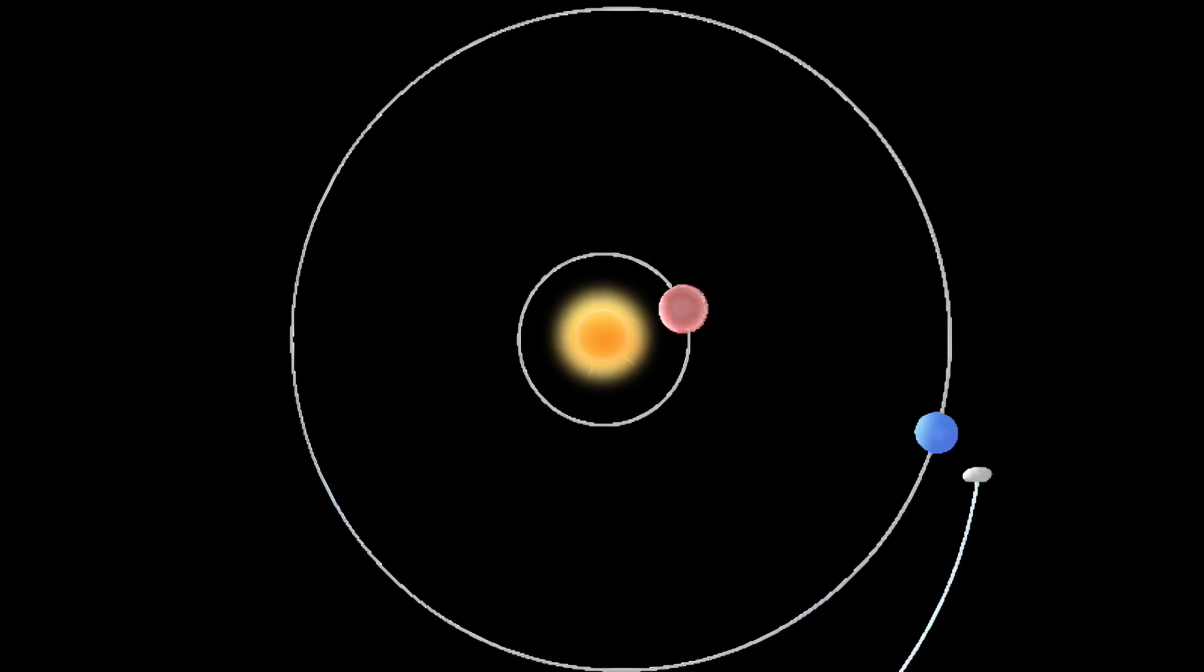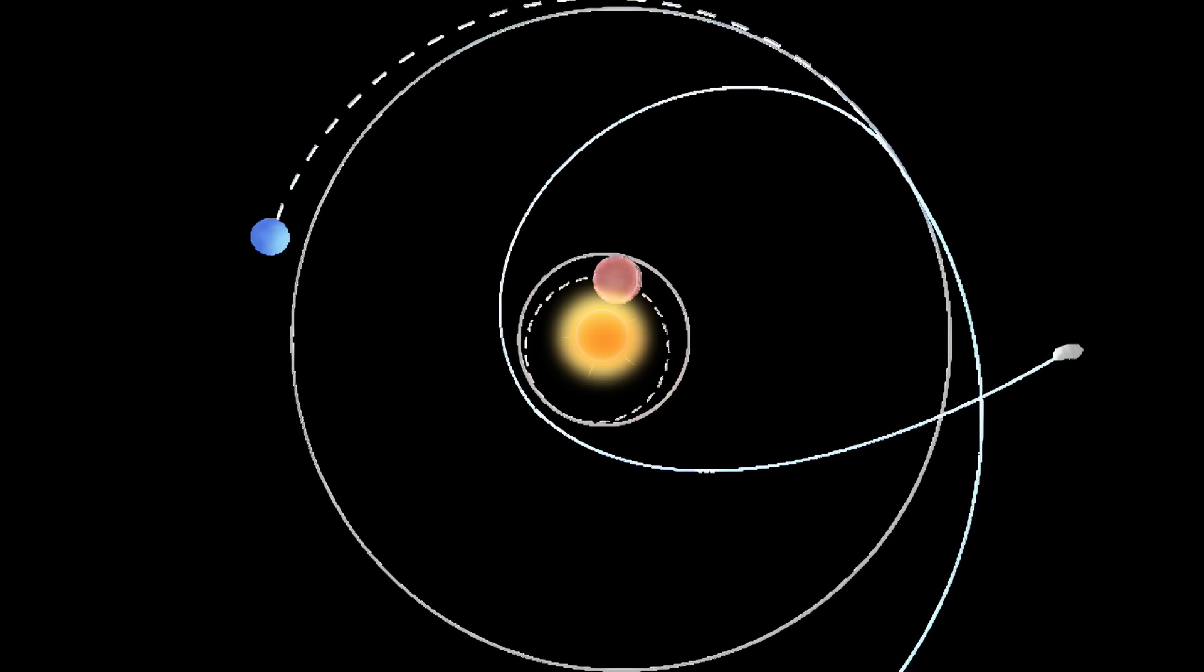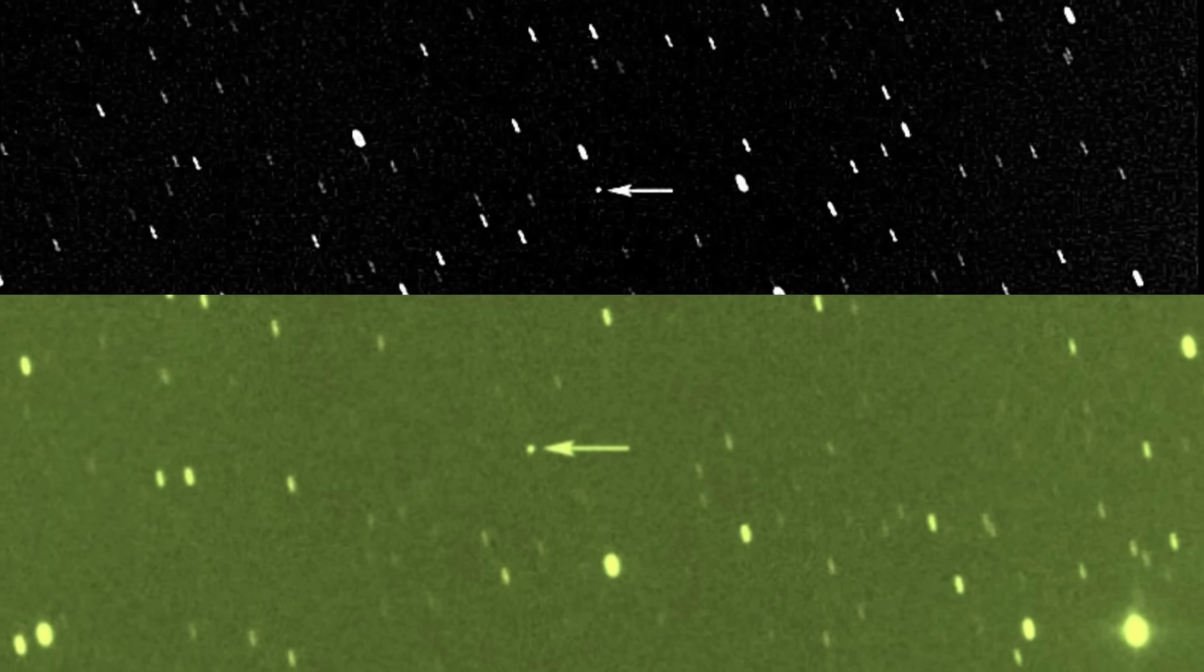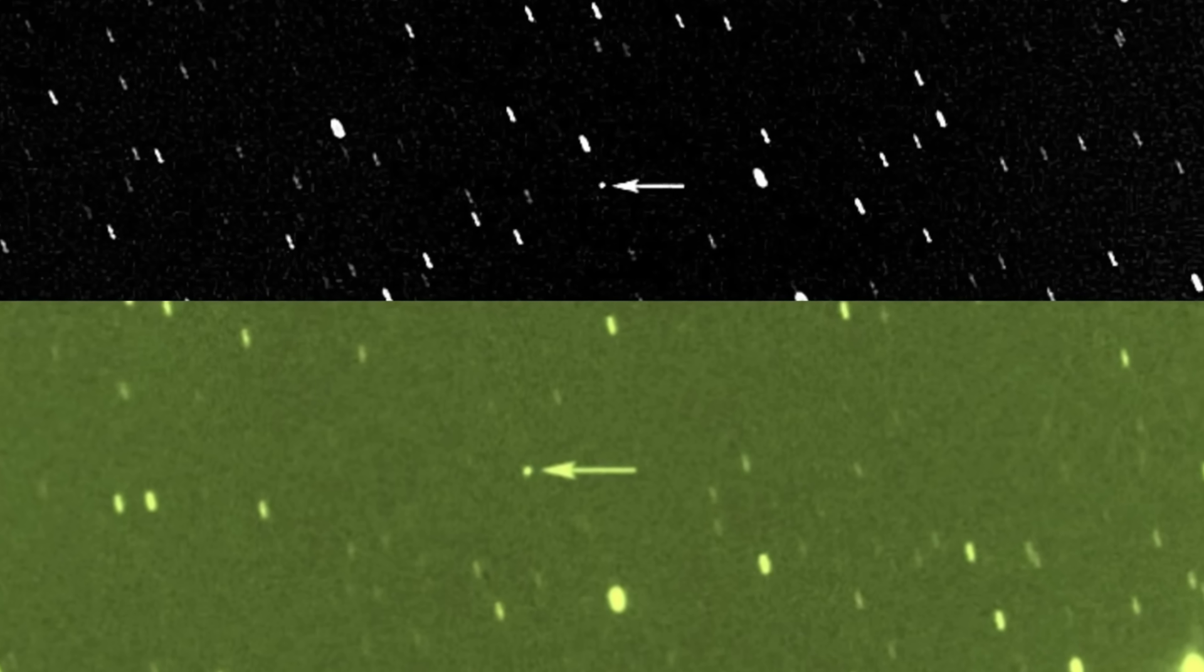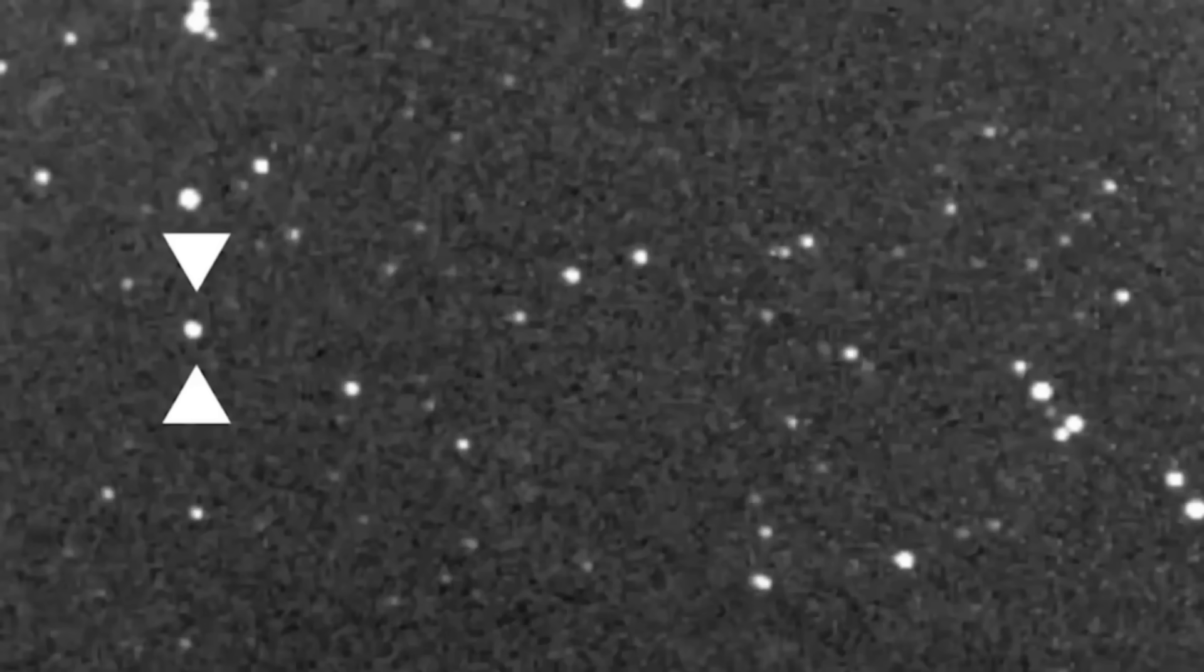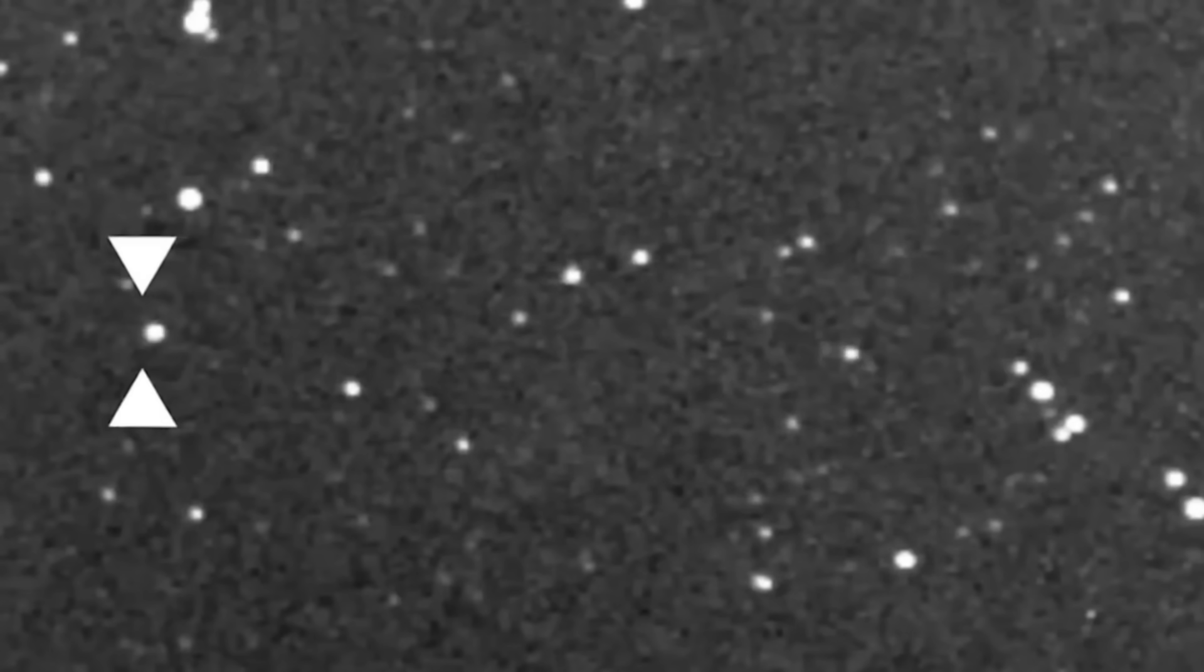One taken by the IRS satellite back in 1983, and another by Japan's Akari mission between 2006 and 2011. A team led by an astronomer at the National Tsinghua University in Taiwan did something clever. They looked for objects that showed up in both surveys, but not in the same place. The idea is that if something moved slightly between the two time periods, it might be orbiting the Sun, just very, very slowly.